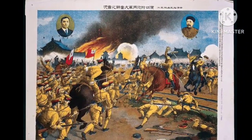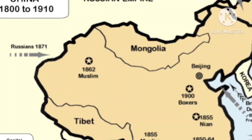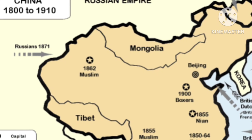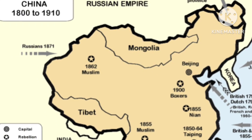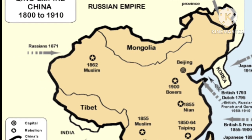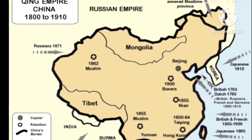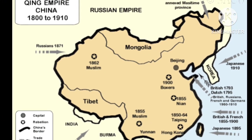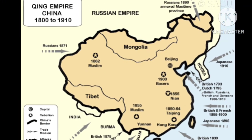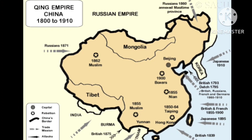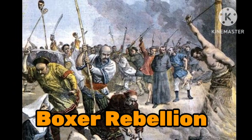Economic instability also contributed to the fall of the Qing dynasty. In the late 19th century, China was struggling to keep up with the economic and technological advancements of the West. The government was unable to modernize the economy and implement effective reforms, which led to a decline in living standards for many Chinese people.